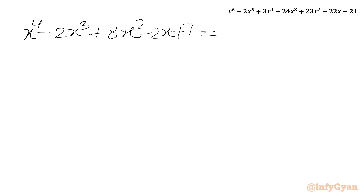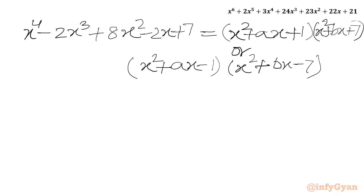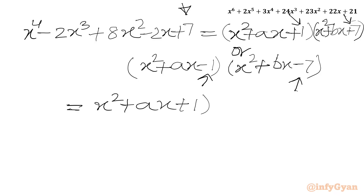We will write this quartic expression equal to a product of two quadratics. I can write x squared plus ax plus 1, times x squared plus bx plus 7. Alternatively we could write x squared plus ax minus 1 times x squared plus bx minus 7, since minus 1 times minus 7 is plus 7, and plus 1 times plus 7 is also plus 7. So we are going to consider the first case.